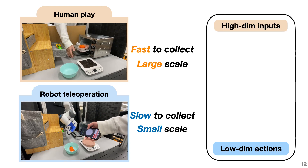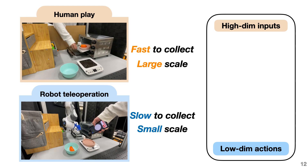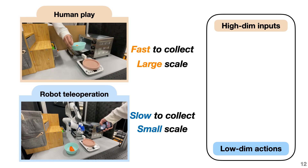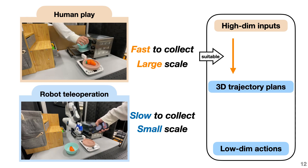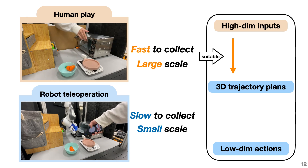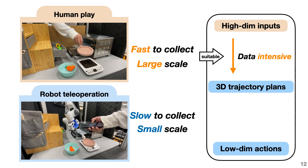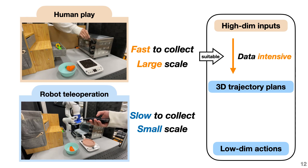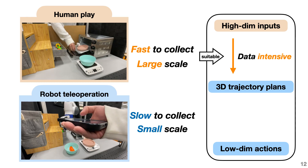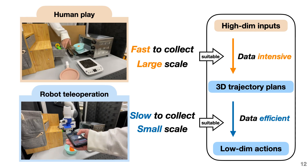Considering traditional visual model policies that try to map high-dimensional inputs to low-level robot actions: although human play data cannot train the policy end-to-end, it enables the robot to first map the inputs to 3D trajectory-level plans, which is a step usually considered data intensive. With the low-dimensional plan in place, mapping these plans to robot actions becomes much more efficient, so that we only need a small amount of robot data to bridge the gap.